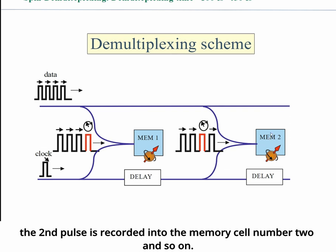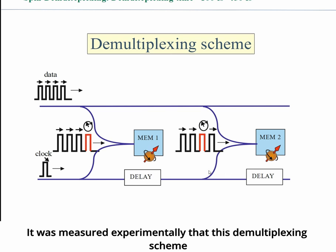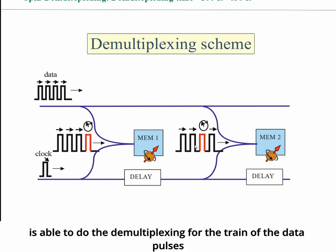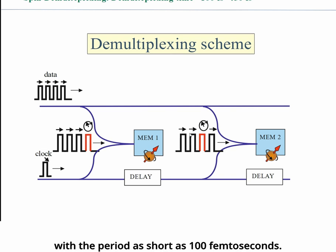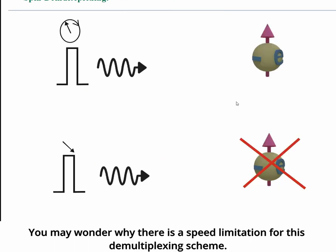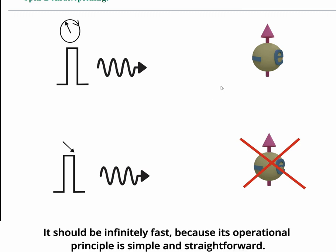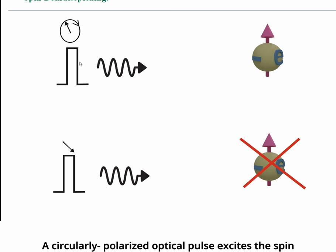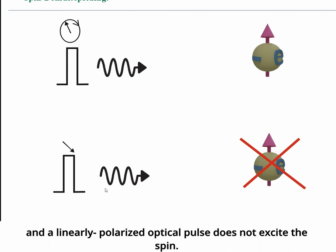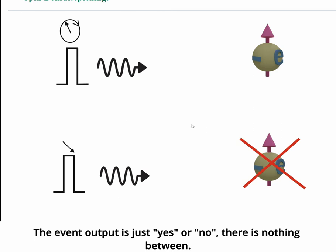It was measured experimentally that this demultiplexing scheme is able to perform demultiplexing for a chain of data pulses with a period as short as 100 femtoseconds. You may wonder why there is a speed limitation for this demultiplexing scheme, since its operation principle appears simple and straightforward — a circularly polarized pulse excites the spin, a linearly polarized pulse does not, and the outcome is simply yes or no.